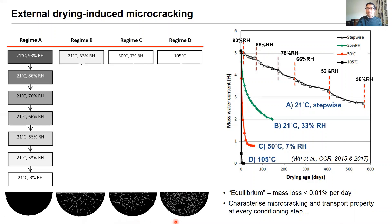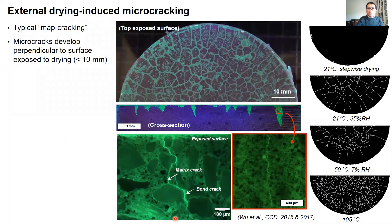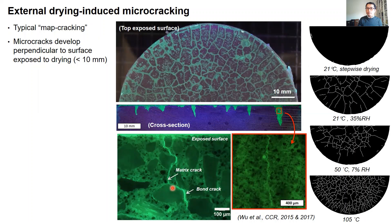We characterized the resulting microcracks and transport properties at every drying step along the way. Here are some example fluorescent images showing how the microcracks look on the surface exposed to drying and on the cross-section of the sample. We can see that concrete undergoes significant microcracking. The cracks initiate at the surface exposed to drying, where moisture loss is highest, forming a typical matt pattern on the surface. The cracks then propagate inwards, approximately perpendicular to the drying surface, and occasionally branch out or propagate around aggregate particles, forming matrix and debonding cracks.